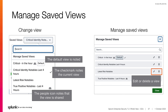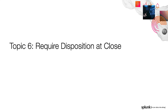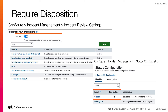Let's take a look at our final topic: Require Disposition at Close. A new setting available in version 7.2 is the ability to require a Disposition be selected before an analyst can save an end status for a notable event in Incident Review. To configure this option, navigate to Configure, Incident Management, Incident Review Settings, and scroll to the bottom of the page. Under Incident Review Dispositions, toggle the Required button to require adding a disposition when choosing an end status for a notable event.